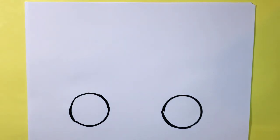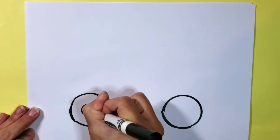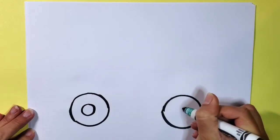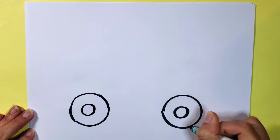Next I'm going to go ahead and draw another circle inside of each of my circles for the inside of the wheels.